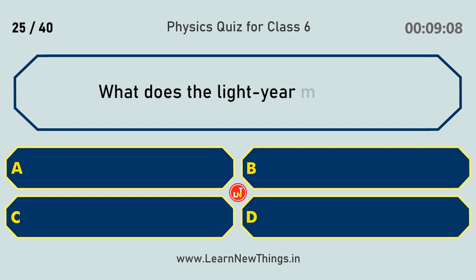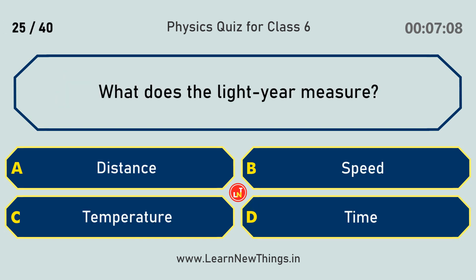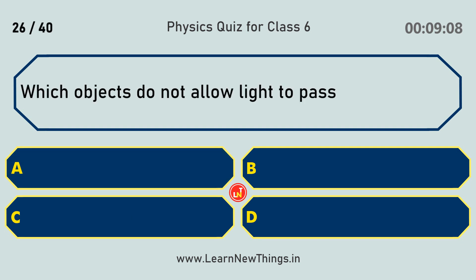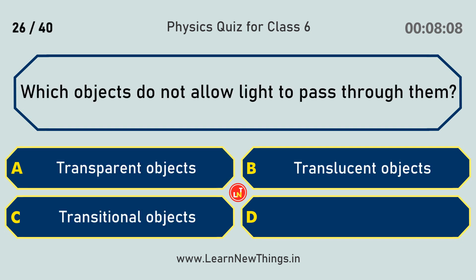What does the light year measure? Distance. Which objects do not allow light to pass through them? Opaque objects.